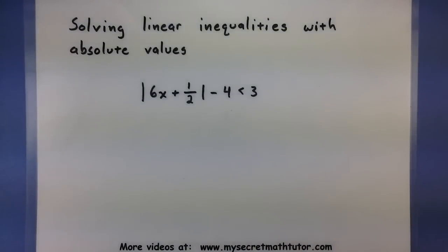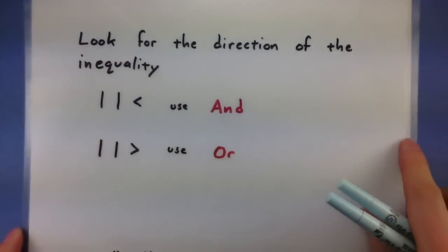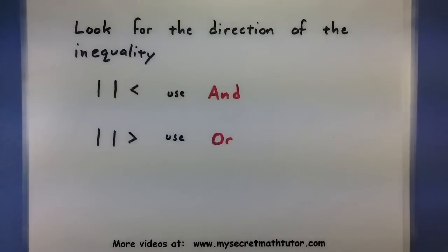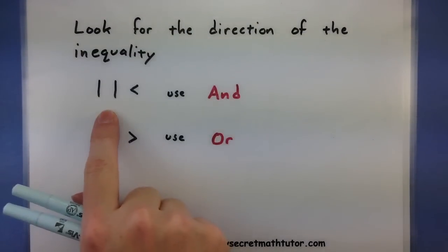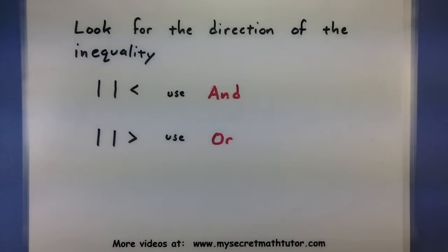Here's your clues on how to connect those two problems. All you have to do is look at your inequality symbol and the direction that it goes. If I have absolute value less than, that's my clue that I will connect my two problems using AND. If I have absolute value greater than, then I will connect them using OR.